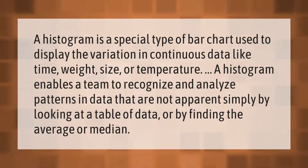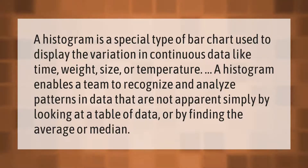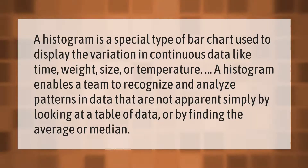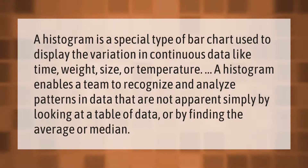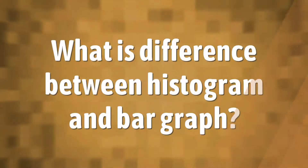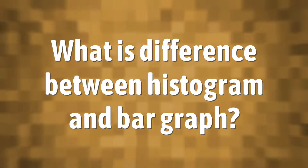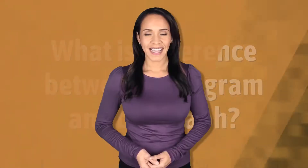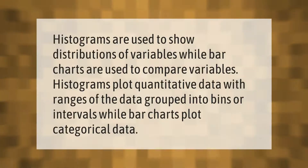A histogram is a special type of bar chart used to display the variation in continuous data like time, weight, size, or temperature. A histogram enables the team to recognize and analyze patterns in data that are not apparent simply by looking at a table of data or by finding the average or median.